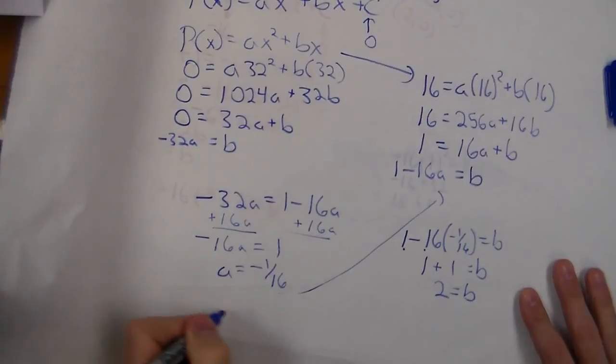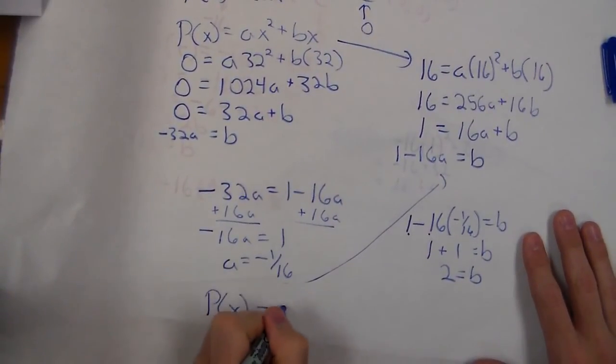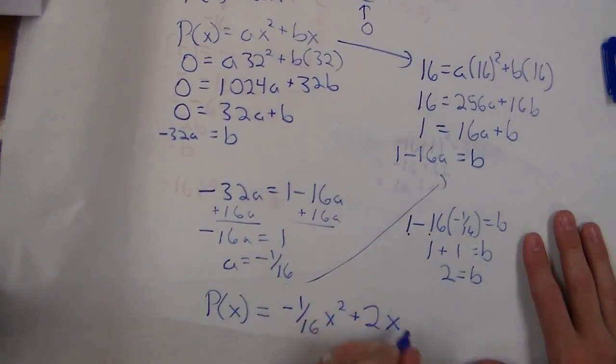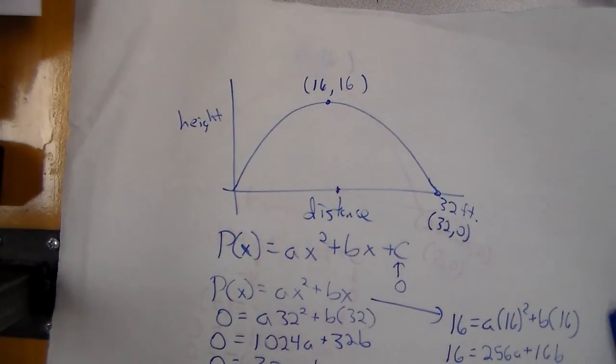So our function is now p(x) = -1/16 x² + 2x to represent my position function of the ping pong ball.